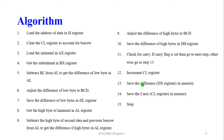Next, get the high byte of the minuend into AL — that means the AH value is moved into AL. Then perform subtraction between AL and BH; the result is stored in AL. This subtraction is performed along with the previous borrow, which is why we use the SBB instruction here. The result is not a BCD number, so we adjust the difference of the high byte to BCD.